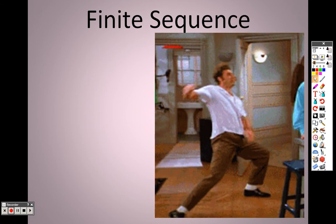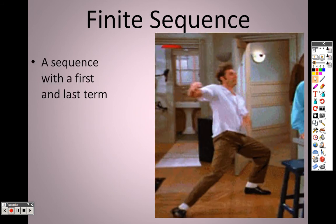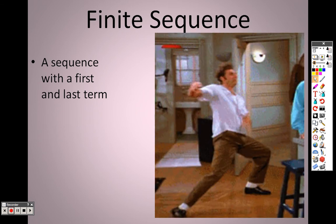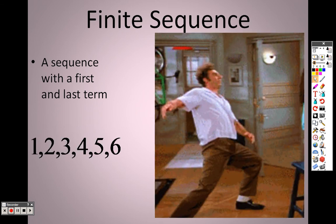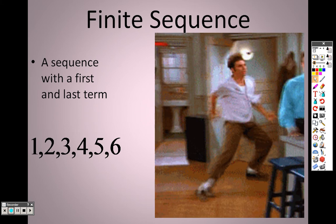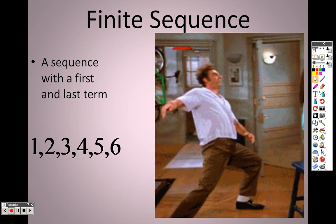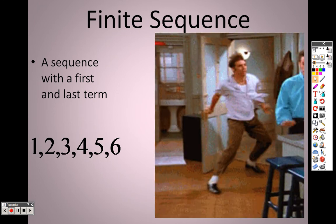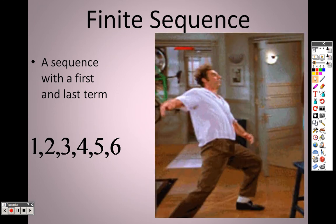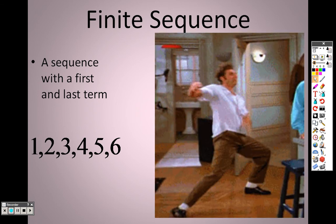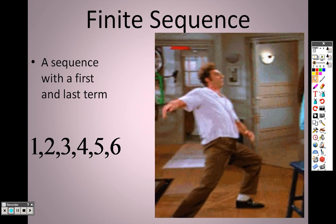A finite sequence is a sequence with an ending, so it's going to have a first term and a last term. An example would be something like this: a sequence with terms all going up by 1 each time. I'm giving you the first number and the last number of the sequence. It starts at 1 and goes up to 6, telling you where it starts and where it stops.